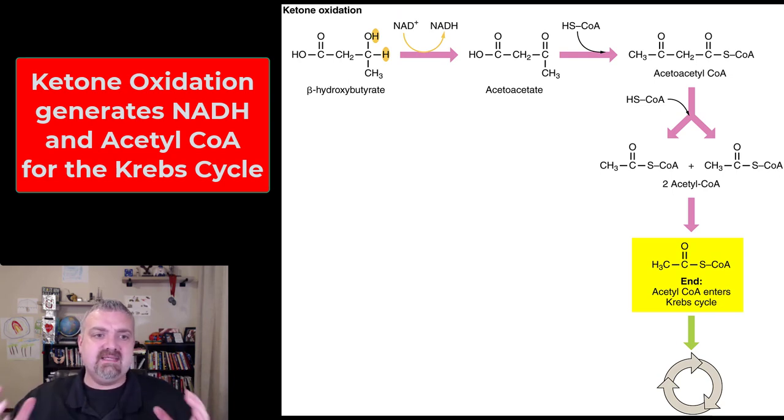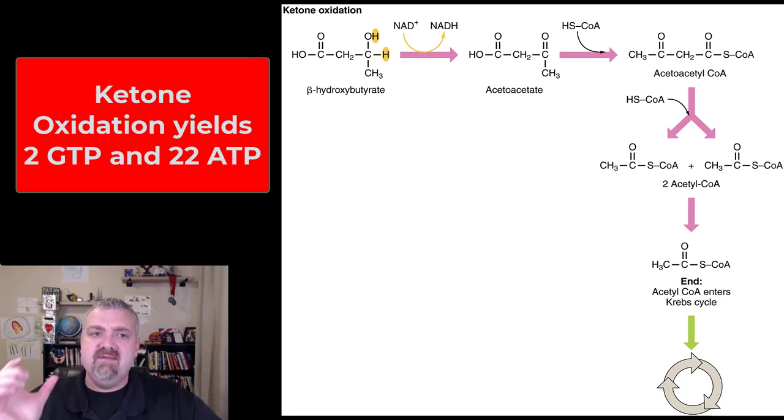Ketones can make some energy now, but you can also use these acetyl-CoAs in the Krebs cycle once there's room for them, once that traffic jam is over. If you take that acetoacetate and fully oxidize it, it will yield 2 GTP, which can create ATP, and then 22 ATP directly. So it's a very good fuel source.